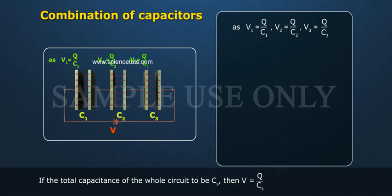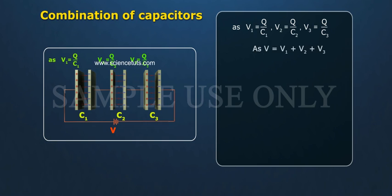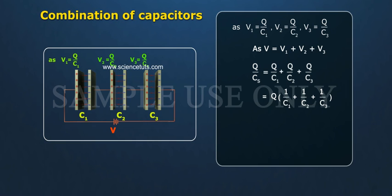If the total capacitance of the whole circuit is Cs, then V equals Q by Cs. As V equals V1 plus V2 plus V3, therefore Q by Cs equals Q by C1 plus Q by C2 plus Q by C3, which equals Q times (1 by C1 plus 1 by C2 plus 1 by C3).